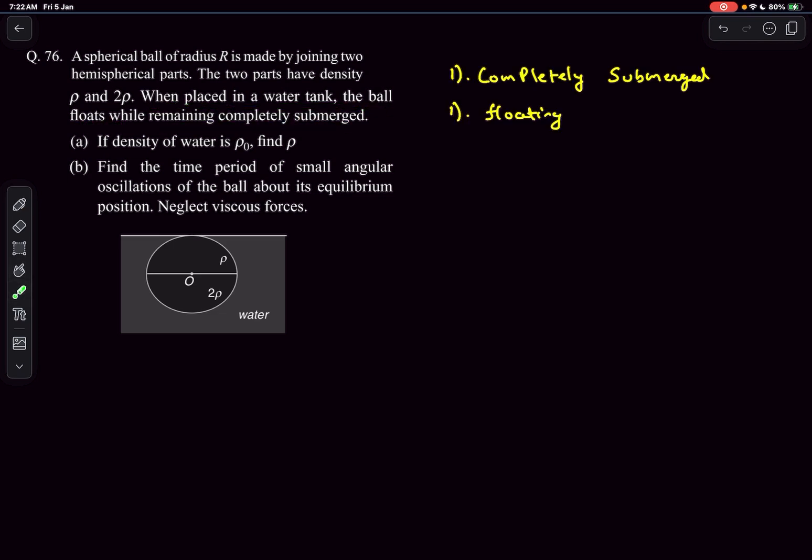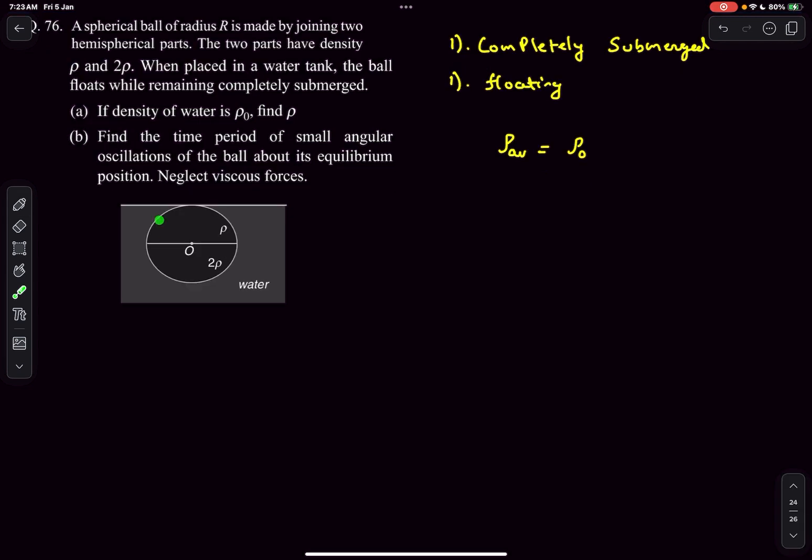It's given that it's completely submerged and floating, which basically means that the average density of the body must definitely be equal to the density of the fluid. The average density is the total mass divided by total volume. As the volume of each part is the same, this reduces to rho plus 2 rho divided by 2, which is 3 rho divided by 2, and this must equal rho naught. Therefore, rho equals two-thirds of rho naught. This is the answer for option A.